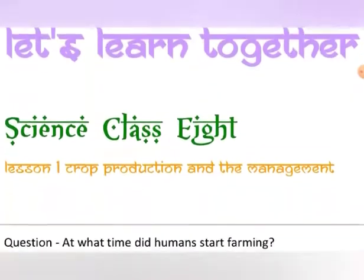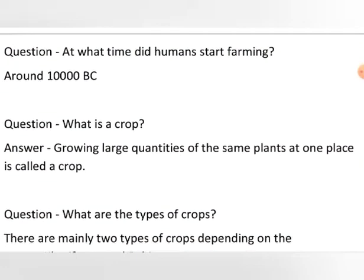Let us learn together. Before we start the chapter, let us discuss a general thing. In the ancient time, human beings were not so civilized as they are today. The earliest man used to wander here and there in search of food, hunting animals. But later on, with the passage of time, he somehow came to know how to grow crops, and learning to grow crops proved to be a milestone in the evolution of human civilization.